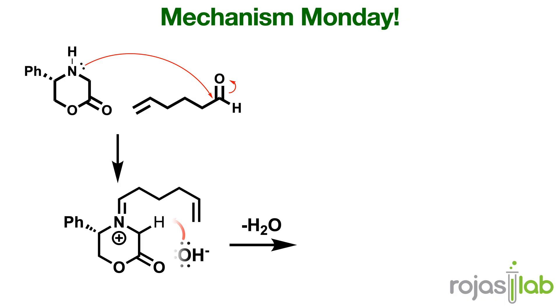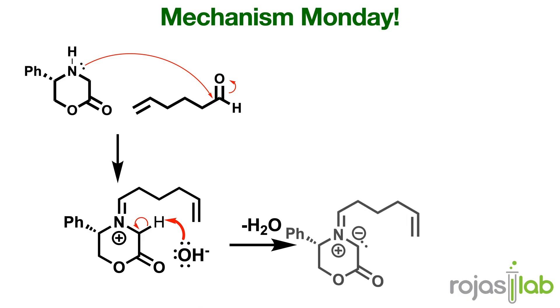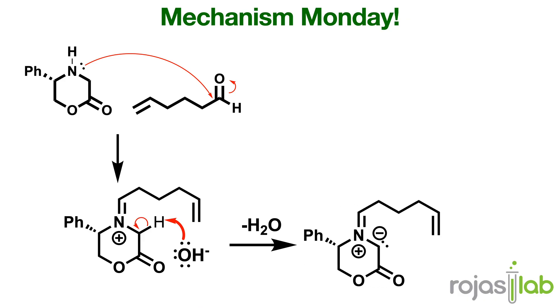The next step, a base is going to be used to deprotonate one of the neighboring hydrogens. This actually ends up generating what's known as a ylid, which is a neutral molecule that contains both a positive and a negative charge on adjacent atoms.